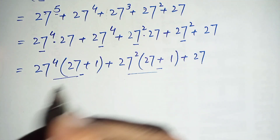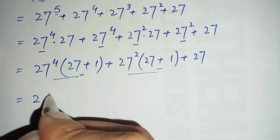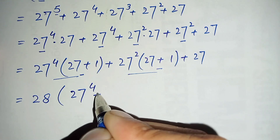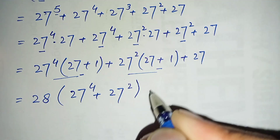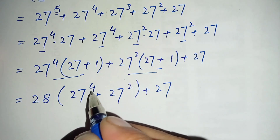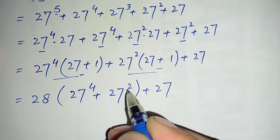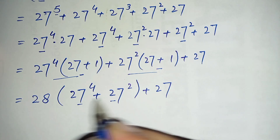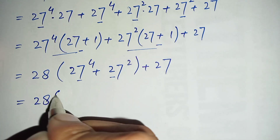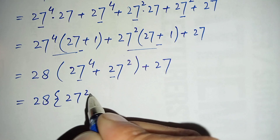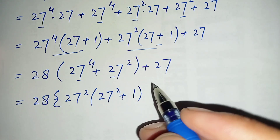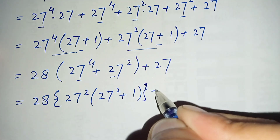We take 28 common from these two terms, leaving (27 to the power 4 plus 27 to the power 2), plus 27. Then from the remaining expression, we take 27 to the power 2 common from the two inner terms, giving: 28 times 27 to the power 2 times (27 to the power 2 plus 1), plus 27.